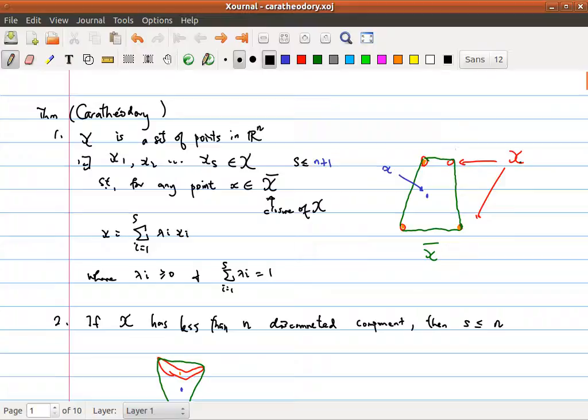For example here, I have this x which is just four points here in the space R^2, and the convex closure will be just this green box here, inside this green boundary. I'm going to consider any points in this convex closure, let's say this point x here.